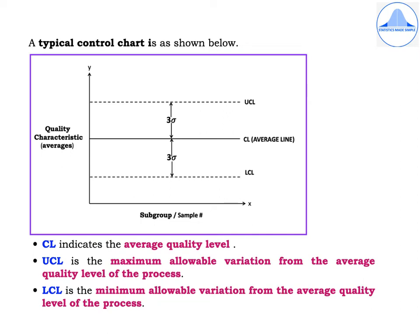A typical control chart is as shown below. On the x-axis we have the subgroup or the sample number, and on the y-axis we have the quality characteristic which are the averages. The central line is drawn as a thick dark line and the UCL and LCL are drawn as dotted lines. The control limits are set at ±3 standard deviations, that is ±3 sigma, of whatever is being plotted.